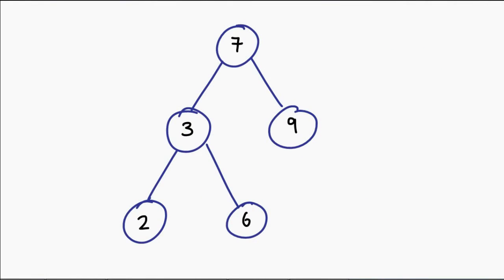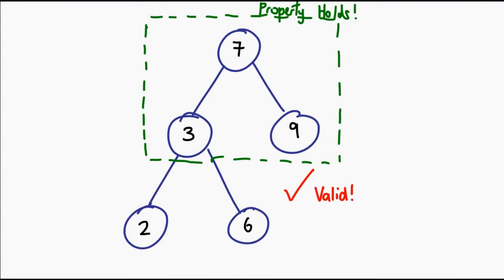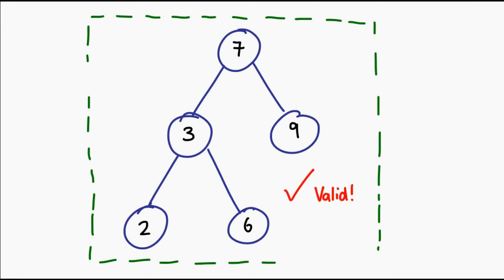If we were to add values into a binary tree, this is a valid tree. Why? Because essentially, if I were to pick any node, all the values to its left are smaller than it, and all the values on the right are greater.